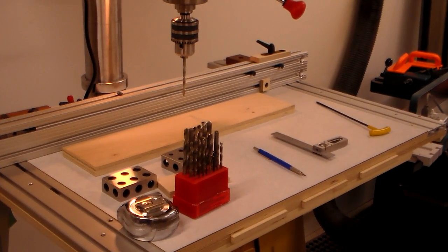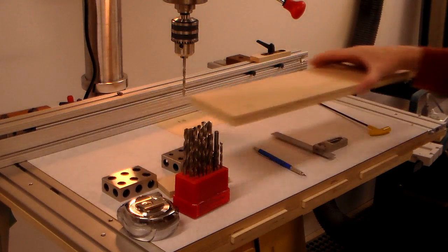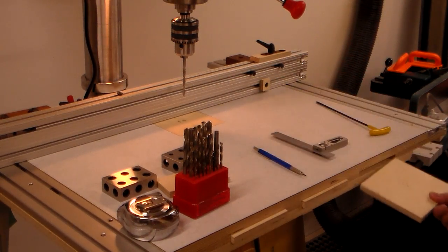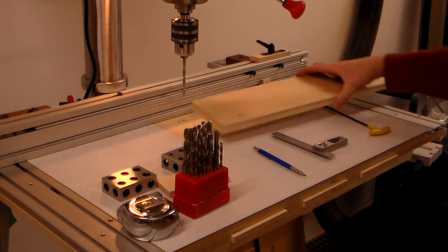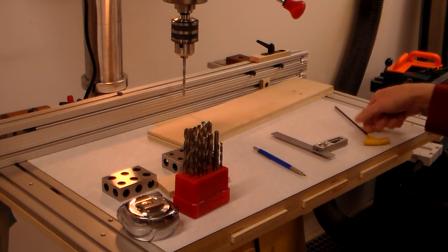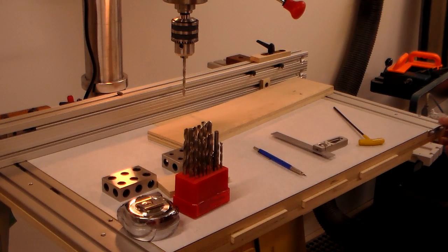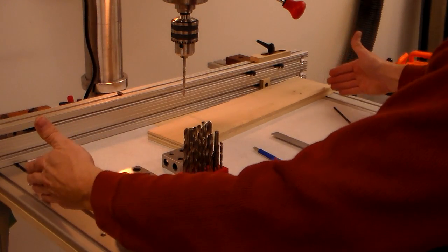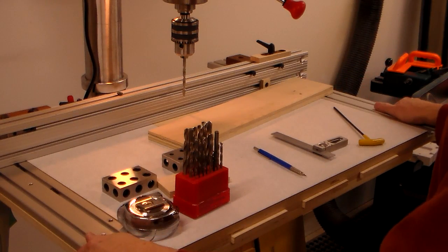So I built this drill press table with these replaceable inserts that give you a good backer when you're drilling through holes and extrusion on the side here. This is 16 millimeter by 80 millimeter extrusion with a couple of grooves in it. These extrusions can slide out, and I'll show you how I did that in the construction videos.